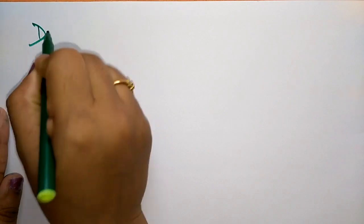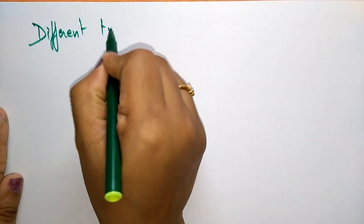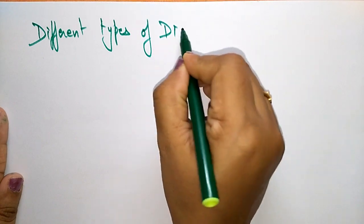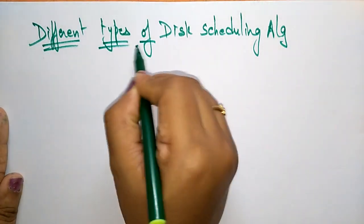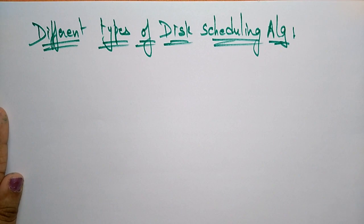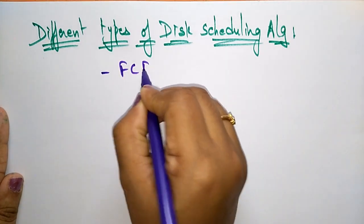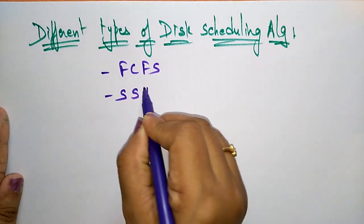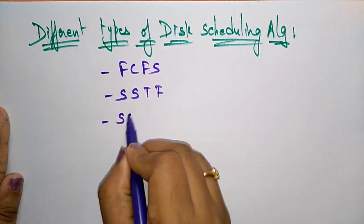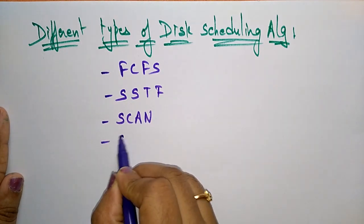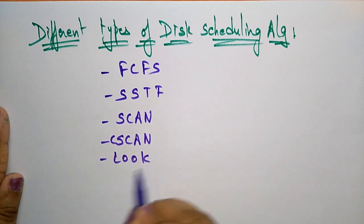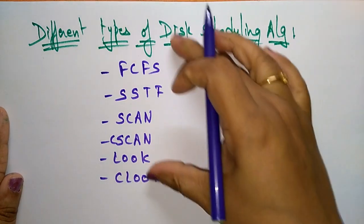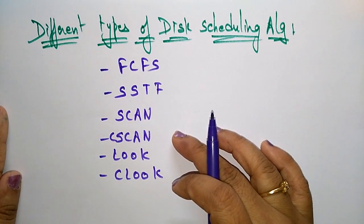Welcome students. Let's look at the different types of disk scheduling algorithms: the first one is FCFS (First Come First Serve), then SSTF, SCAN, C-SCAN, LOOK, and C-LOOK. These are the different types of disk scheduling algorithms.